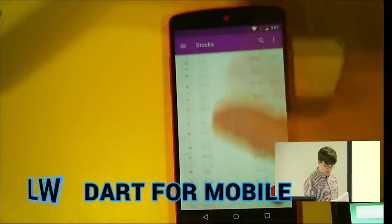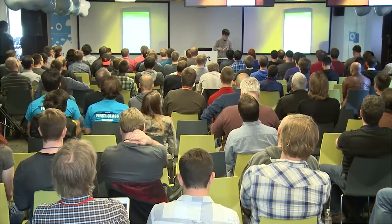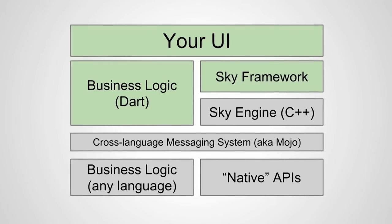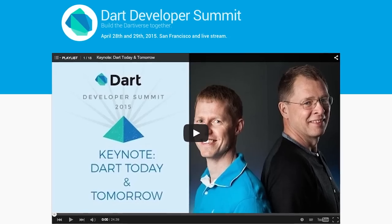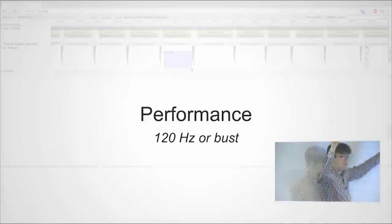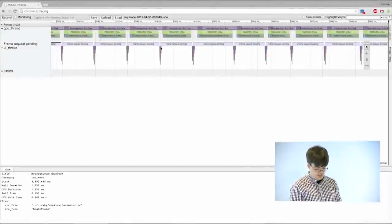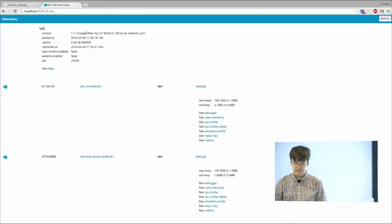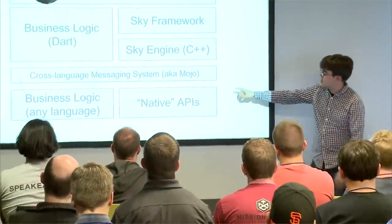What if you could write mobile apps with Dart? Eric Seidel from Google demonstrates Sky, an experimental open source framework for writing mobile apps at this year's Dart Summit. Designed to produce 120Hz experiences, Sky aims to take the best parts of the Chrome and Dart ecosystem and combine them with an easy-to-deploy package for native apps.